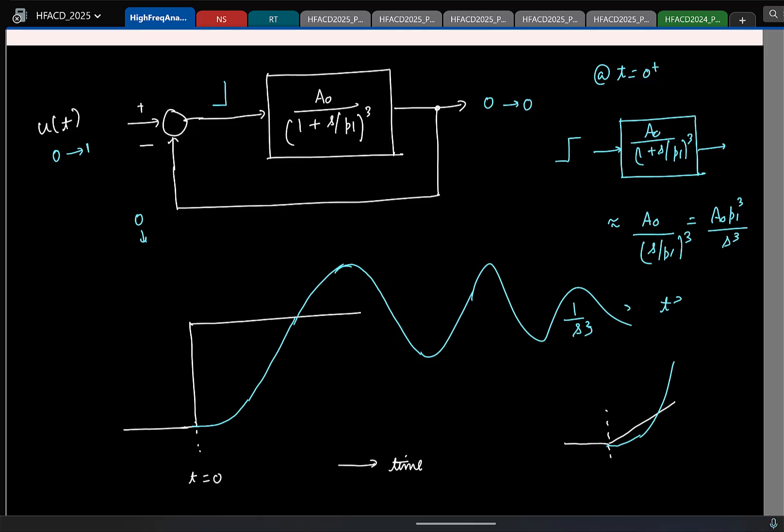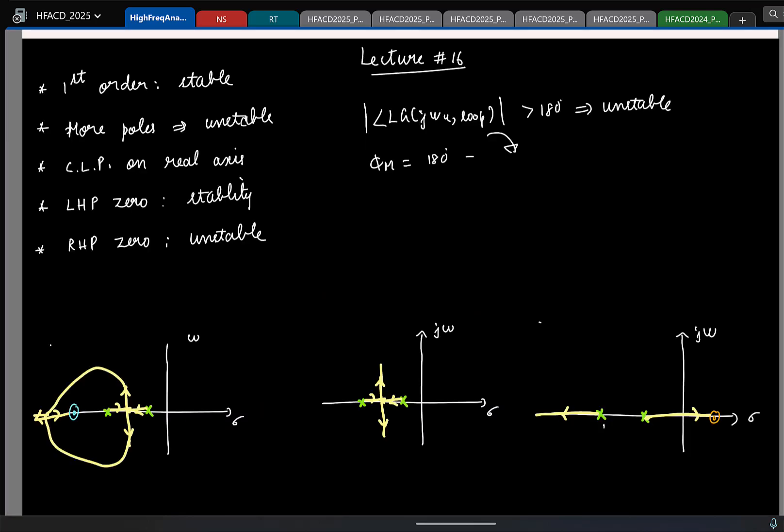That is the bottom line. If you have more and more poles in your system, you have more and more delay introduced. Having a lot of delay in any negative feedback system is not good for stability. That explains the answer to our first question - we have some understanding of why having a lot of poles makes the system unstable in closed loop.